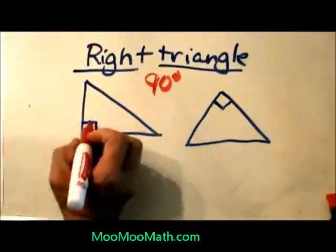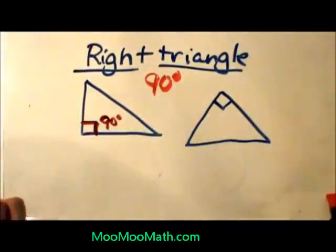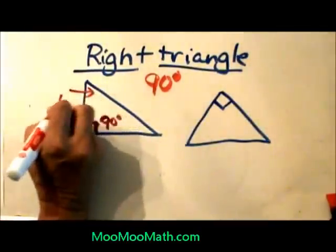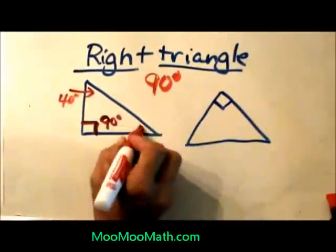So in this triangle we have this little symbol, and that means it is a right angle or 90 degrees. That means these other two smaller angles add up to the other 90 degrees. So if this angle is 40, this angle must be 50. They are called complementary angles.